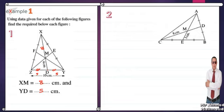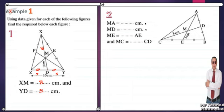Number two: here CD is a median and AE is a median, and they intersect at point of concurrence M. We need MA: since MA is a part from the vertex direction, this part equals double 3, which is 6 cm. Then MA equals 6 cm. For MD: since MD is a part from the base direction, it equals half of 8, which is 4 cm.